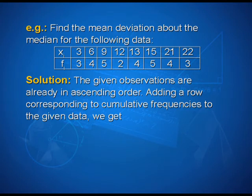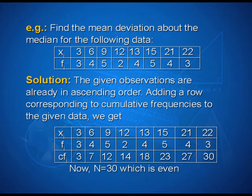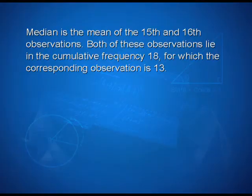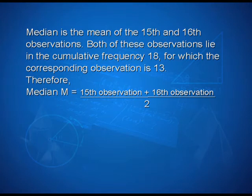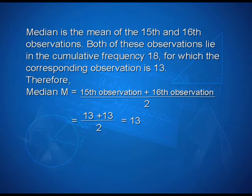The given observations are already in ascending order. Adding cumulative frequencies: 3, 7, 12, 14, 18, 23, 27, 30. So N = 30, which is even. The median is the mean of the 15th and 16th observations. Both lie in the cumulative frequency 18, corresponding to observation 13. Therefore, median m = (13 + 13) / 2 = 13.